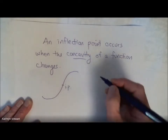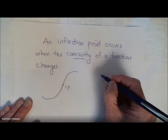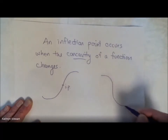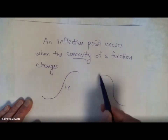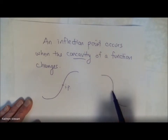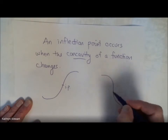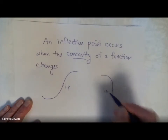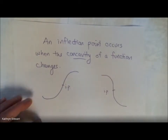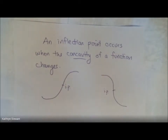Perhaps your function looks like this. It's concave down, then transitions to concave up. There's an inflection point. So an inflection point happens when the concavity of a function changes.